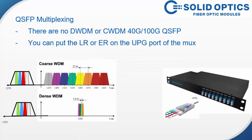A common question is about QSFP multiplexing. There are no DWDM or CWDM 40 gig or 100 gig coherent lasers commercially available at this moment — they could exist but would cost around $100,000 — and none are planned for the coming year either. The only possibility right now is to use the LR or ER on the uplink port of a MUX. You have an LR or ER laser with four colors and you put that on the uplink port of the MUX. The uplink band runs from 1270 to 1450 and is multiplexed together with the other colors.